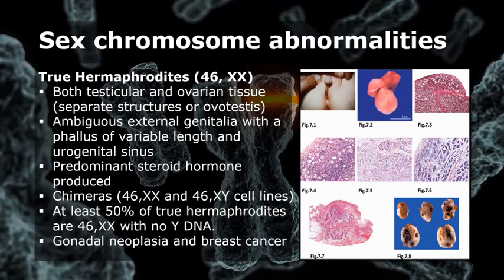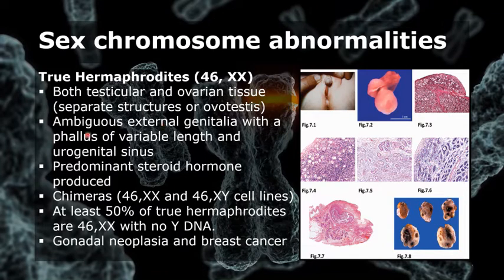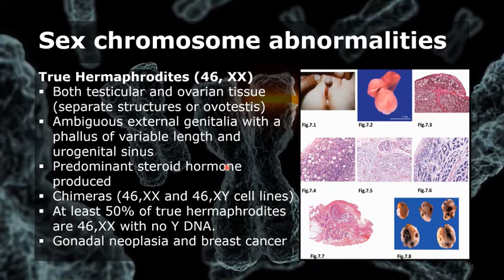Lastly, we have true hermaphrodites. This is a rare condition where both testicular and ovarian tissue is present, either as a separate structure or as an ovotestis. Most patients have ambiguous external genitalia with a phallus of variable length and urogenital sinus, and they are reared as males. They predominantly produce steroid hormones.